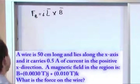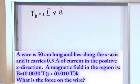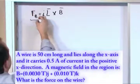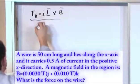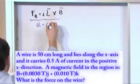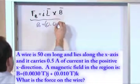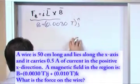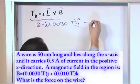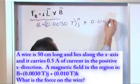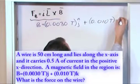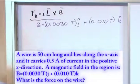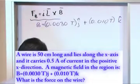So let's just write it down. The magnetic field that we were given is 0.0030 Teslas in the j direction plus 0.010 Teslas in the k direction. And the wire, we're told, it's 50 centimeters long and it's in the x direction.